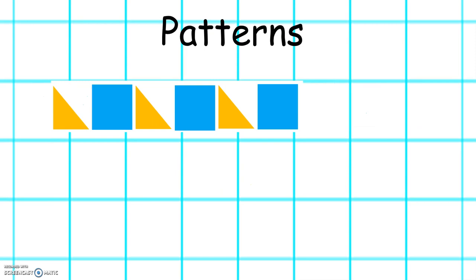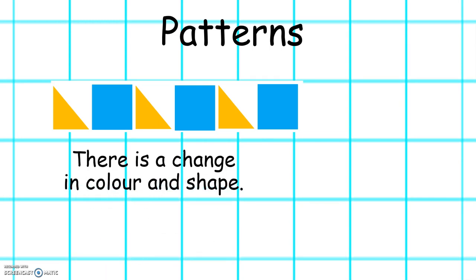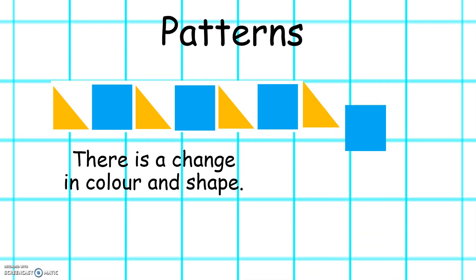Here is another pattern. Can you spot the change? There is a change in colour and shape. So in this pattern we have an orange triangle, blue square, orange triangle, blue square, orange triangle, blue square. What do you think the next 2 shapes will be? Excellent! Orange triangle and blue square.